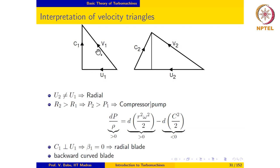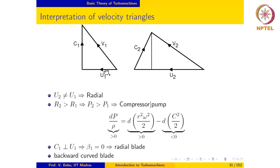If α1 is equal to 0 at inlet, that situation would be referred to as radial entry in the case of a radial machine, and as axial entry in the case of an axial machine. So β equal to 0 implies that the blade is radial or axial as appropriate, and α equal to 0 implies radial or axial entry or exit as the case may be. Furthermore, since the relative velocity curves away from the direction of the blade speed, we can infer that the blade is a backward curved blade in this particular case.